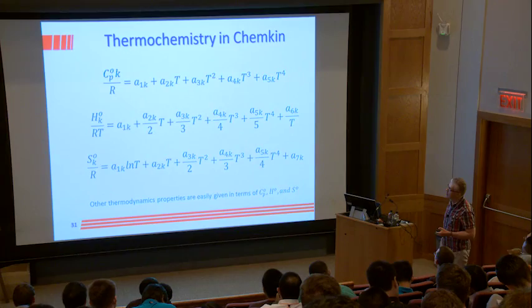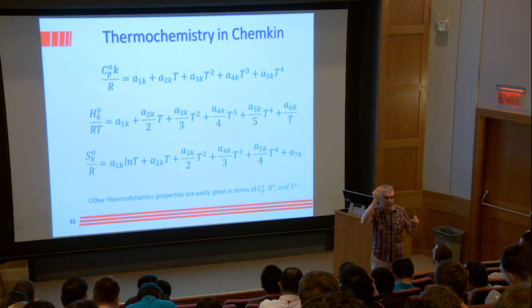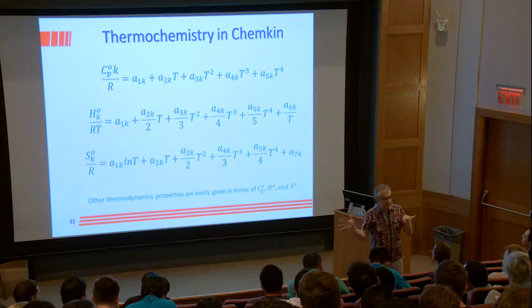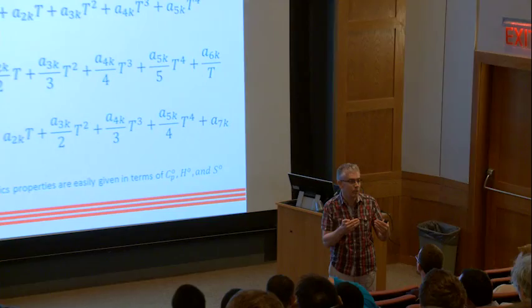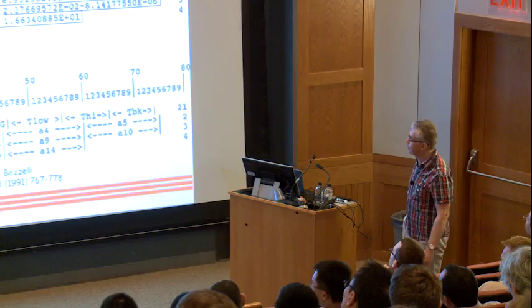THERM calculates enthalpy, entropy, and heat capacity values at different temperatures, then generates the NASA polynomial expressions. Here they are calculated for phenoxy radical and dimethyl ether. Both range from 300 to 5,000 K, but the break temperature differs slightly: 300–1,364 K for dimethyl ether and 1,404 K for phenoxy. The break placement reflects the level of detail needed to get accurate heat capacity values.